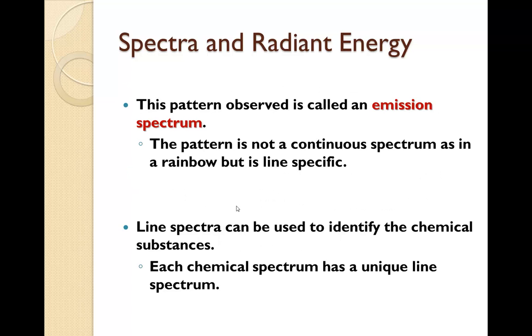This is called the emission spectrum. The pattern is not a continuous spectrum as if it was a rainbow, but very specific lines. Line spectra can be used to identify the chemical substances. Each chemical spectrum has a unique line spectrum.